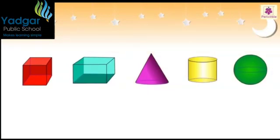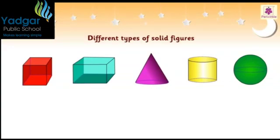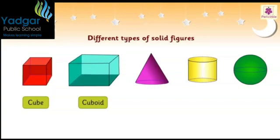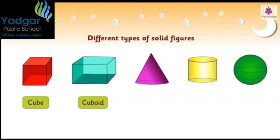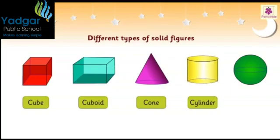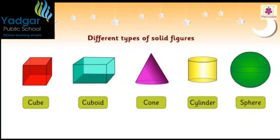The different types of solid figures are cube, cuboid, cone, cylinder, and sphere.